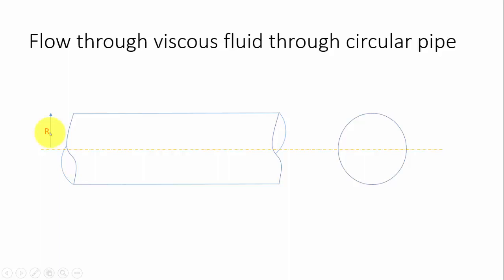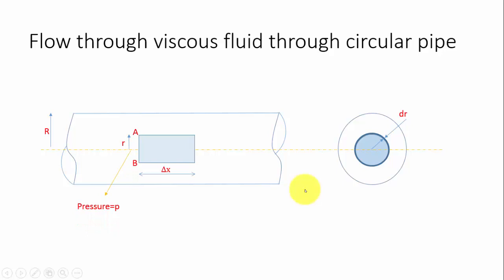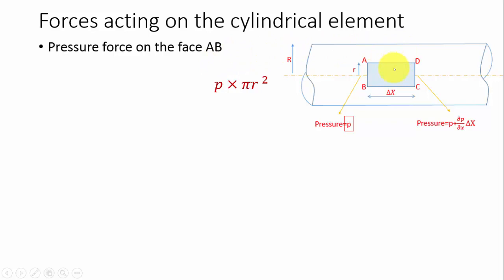Let us consider a pipeline of radius capital R. Inside the pipeline, let us consider a cylindrical element having a radius of small r and a length of delta x. Over that cylindrical element there is a ring element having a thickness of dr. The pressure on the AB face is taken as p. The pressure at the CD face will be p plus (∂p/∂x)·Δx — the change in pressure with respect to the x direction over a distance of delta x.